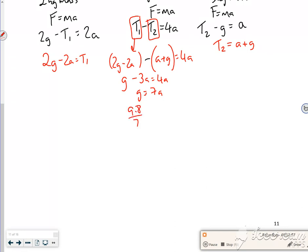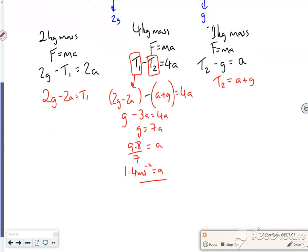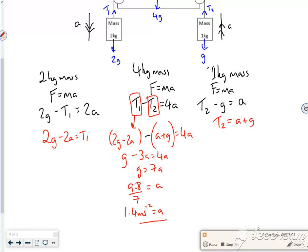So g which is 9.8. So 9.8 over 7 is my acceleration, which is roughly 1.4 meters per second squared. Isn't that nice there? I've created three equations and subbed them over into it to work it out.